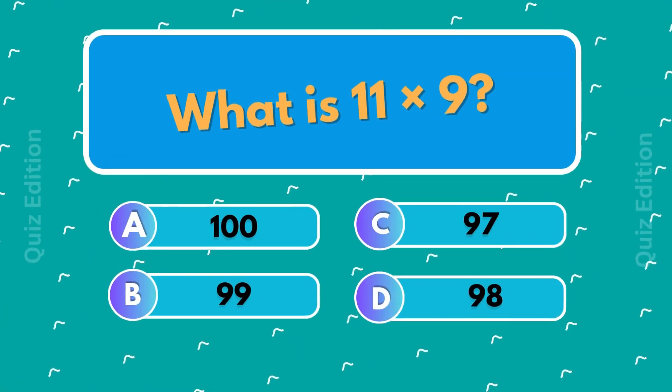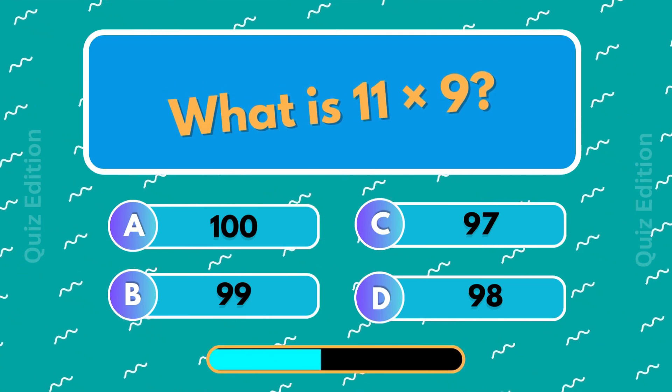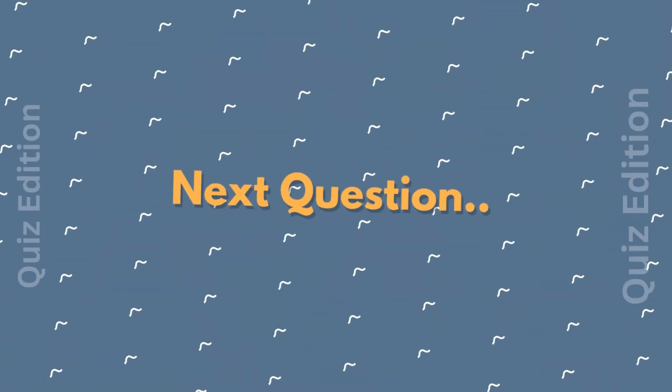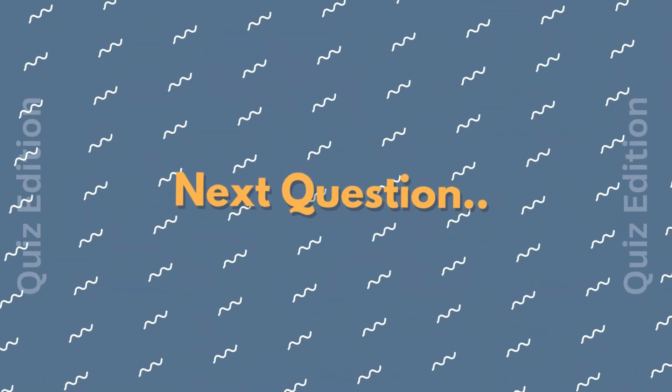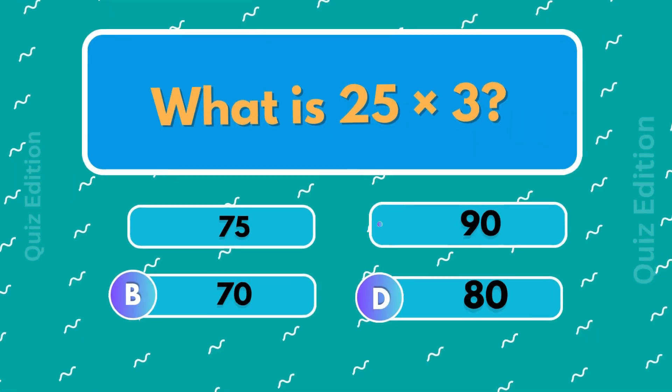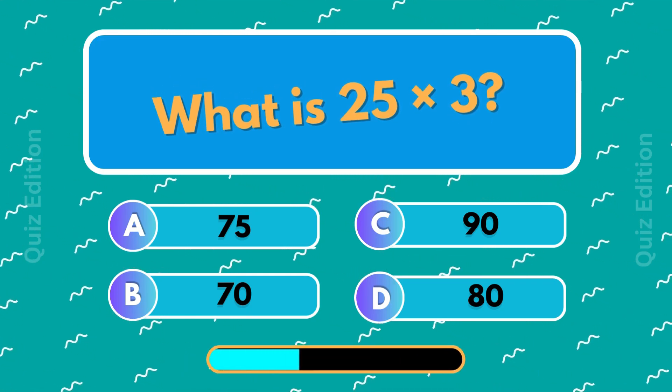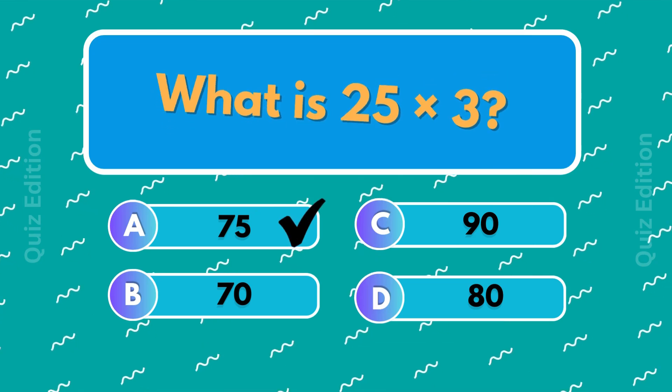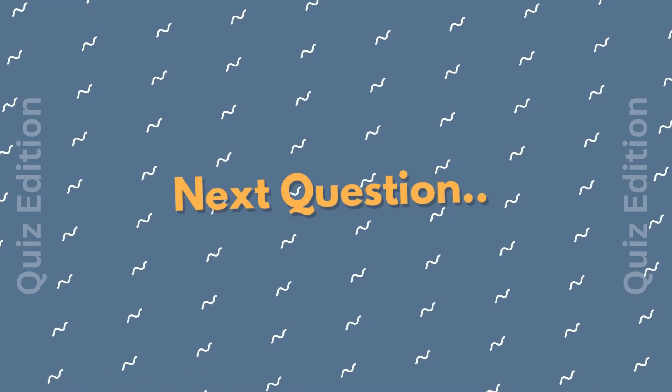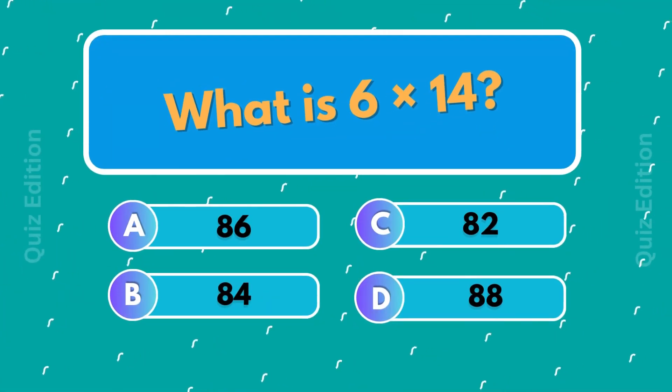What is 11 times 9? 99. What is 25 times 3? 75.